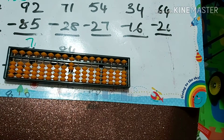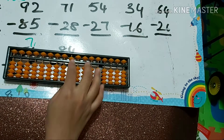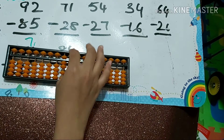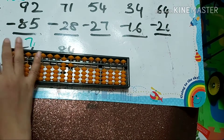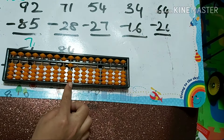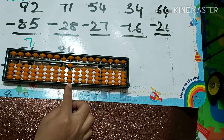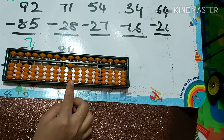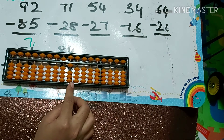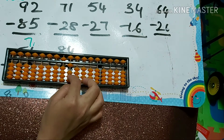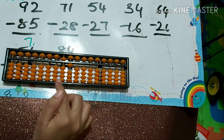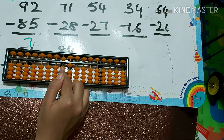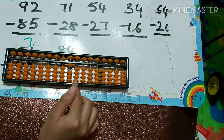Next one: 71 minus 28. Minus 2 directly. For minus 8 we can't do papa down mama — we don't have three babies here — so we must do minus 10 plus 2. I will do plus 2 first, then do minus 10 in the tens column: minus 50 plus 40.